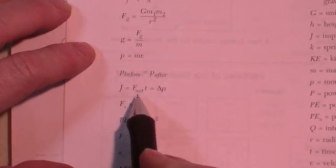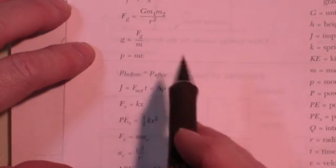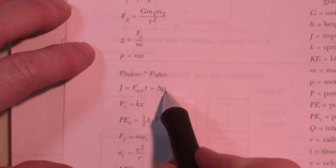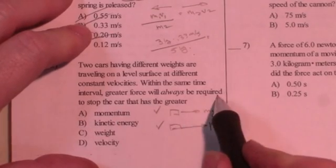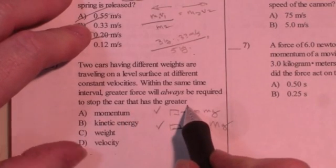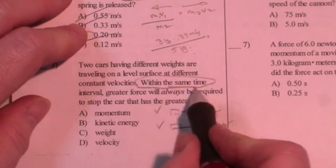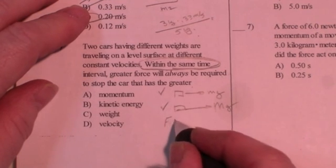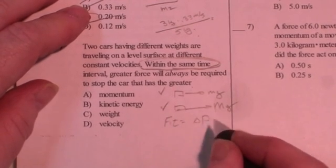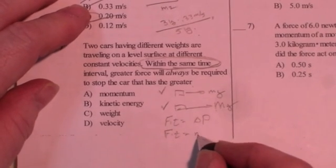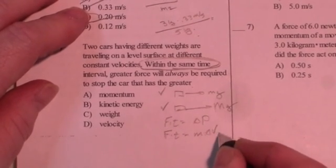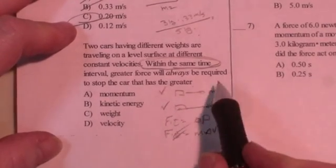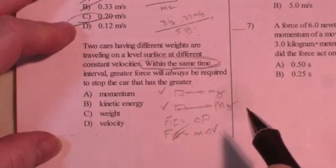This is a problem involving changing momentum. Car's got some momentum. And a force times time is equal to the change in momentum. So greater force will always be required to stop the car that has the greater, oh, within the same time interval. That's an important point. So I can say that F times T is equal to my change in momentum. F times T is equal to M delta V. So a greater force will always be required if you take T out of the equation to stop the car that has the greater momentum.